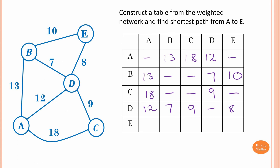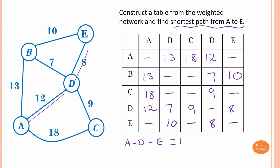Last vertex E: E to A, no direct connection. The only direct connections from E are B and D. E to B is 10. E to C, no direct connection. E to D is 8. E to E is zero — leave it blank. The shortest path from A to E: A to D to E is 12 + 8 = 20. Going A to C to D would already exceed 20. So the shortest path is A to D to E, which equals 20.